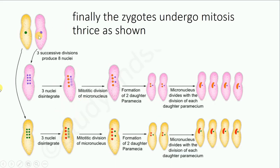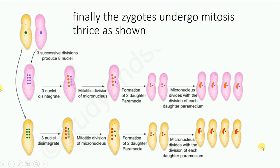These zygote nuclei will undergo three successive mitotic divisions to produce eight nuclei. Out of these eight nuclei, four become the macronuclei and the remaining four become the micronuclei. Out of the four micronuclei, three disintegrate, so we are left with four macronuclei and one micronucleus. This one micronucleus undergoes mitosis, and the individual splits to form two daughter paramecia each having two macronuclei and one micronucleus. The micronucleus will divide with each subsequent division, resulting in four final daughter progeny from each ex-conjugant. So at the end of conjugation, from two parents we get eight paramecia.